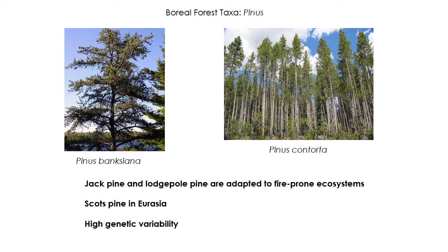In some parts of the boreal forest, we have very abundant pine species — Pinus banksiana, jack pine, on the left, and Pinus contorta, lodgepole pine, on the right. These are adapted to the very fire-prone parts of the boreal forest. Boreal forests burn, and they burn big — very extensive fires that kill lots of trees. The pines are adapted to re-establish after fire and form uniform-age stands. Another adaptation of pines is really high genetic variability, which helps them have a very wide range.